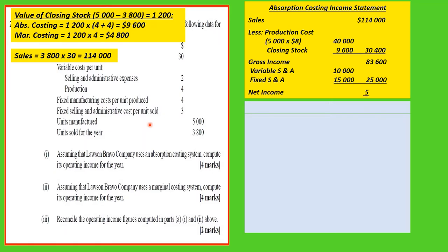After deducting $25,000 in expenses, the net income under absorption costing is $58,600. We now look at the marginal costing system.